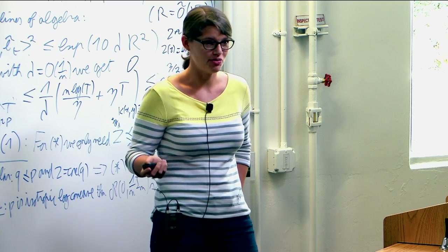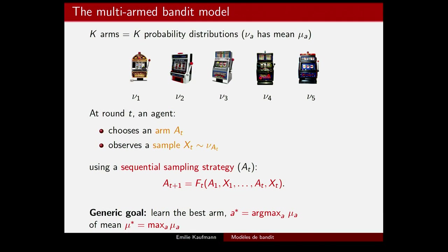A quick recap on the multi-armed bandit problem: there is a bunch of arms that are probability distributions, so arm a has mean mu_a. An agent interacts with these arms and decides at time t to draw arm a_t, after which it observes a sample x_t from the associated distribution. The goal is to learn which arm is best in the sense of the mean — identifying A*, the arm with highest mean.